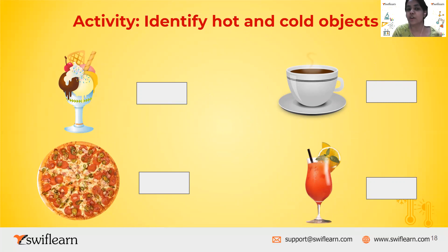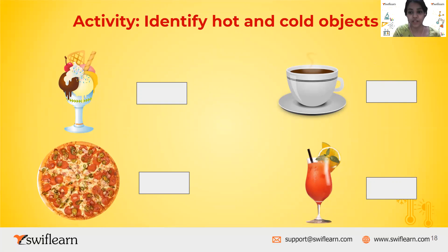Can you tell me which objects shown on your screen are hot and which are cold? Ice cream is a cold object, tea is a hot object, pizza is a hot object, and juice is a cold object.